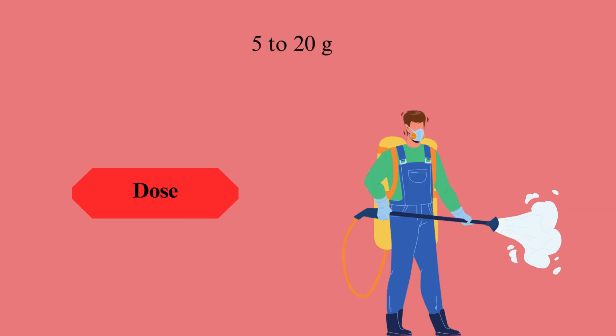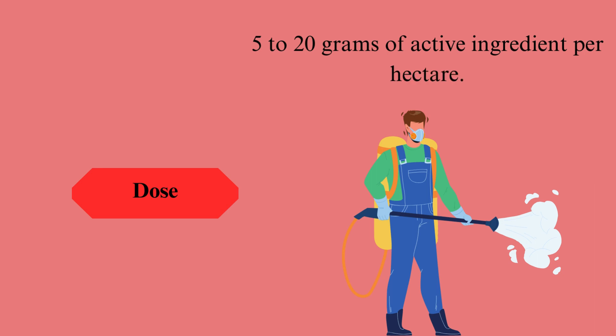Normal dose. The recommended dose of abamectin can vary depending on the target pest, crop, and formulation. As a general guideline, it is commonly applied at rates ranging from 5 to 20 grams of active ingredient per hectare.